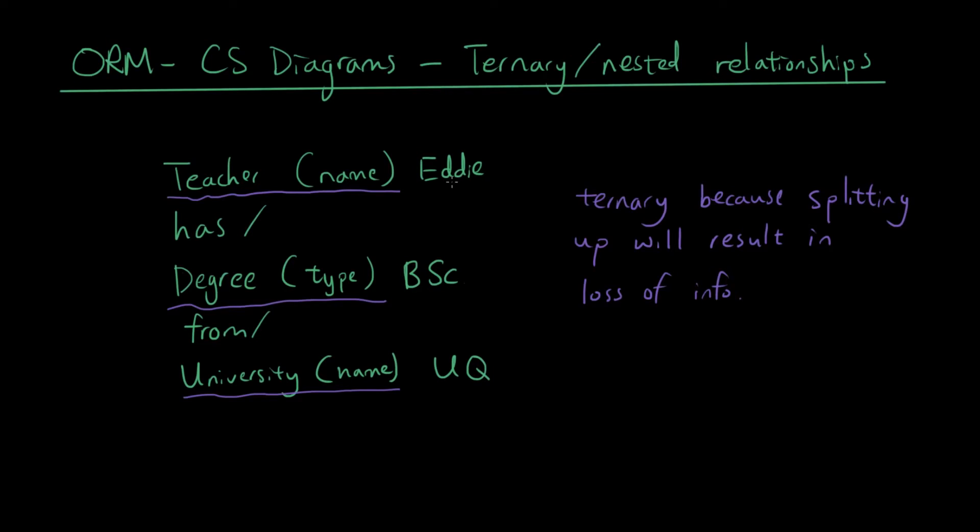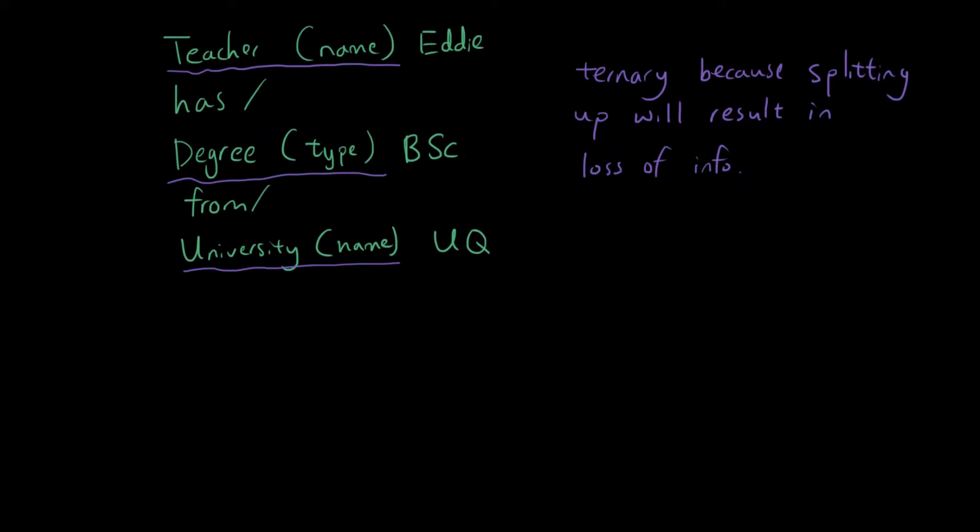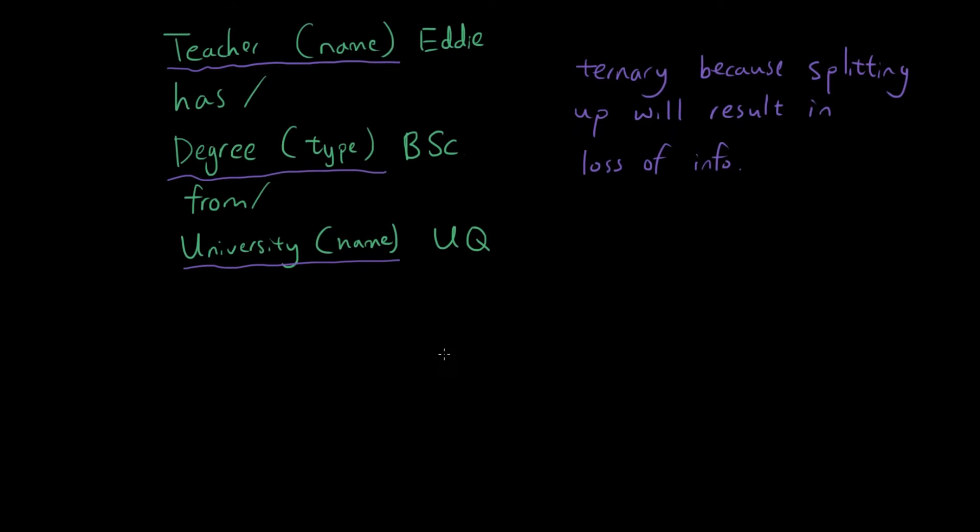If you just say Eddie got a degree, well we don't know what uni he went to, so that's not good either. So we need all three things together in one sentence. So how do we draw that as a ternary relationship?